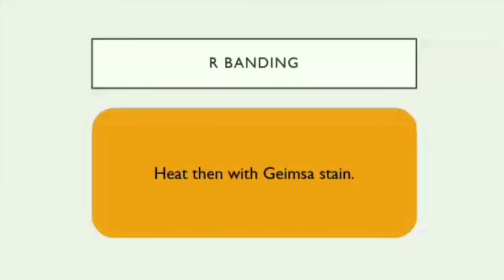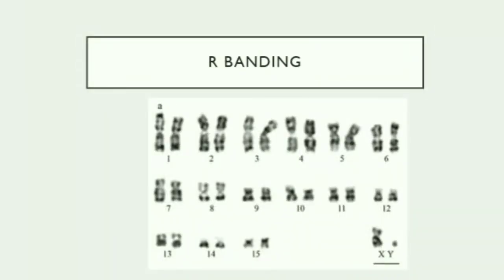The next type of banding is R-banding. In this technique, the chromosome is first heated and then stained with Giemsa stain. R-banding is a reverse of G-banding, because the GC (guanine-cytosine) region is darkly stained, whereas the AT (adenine-thymine) region is denatured by heat.